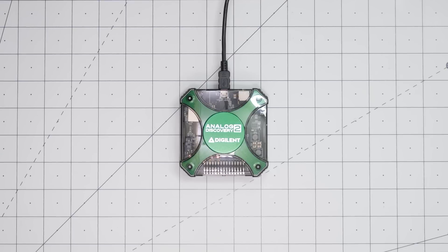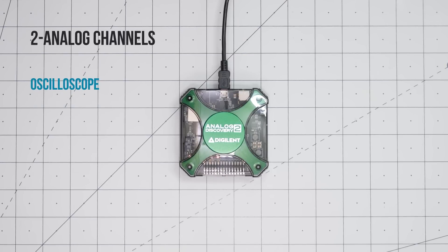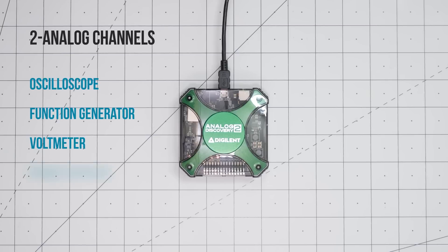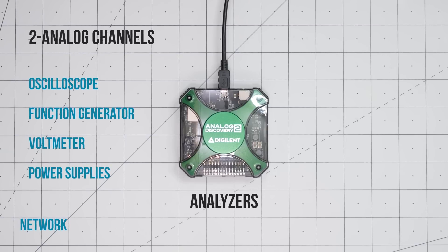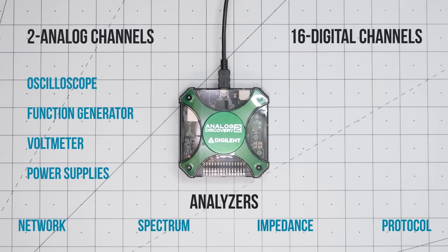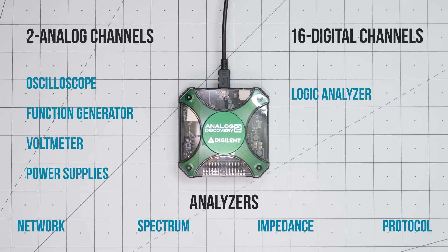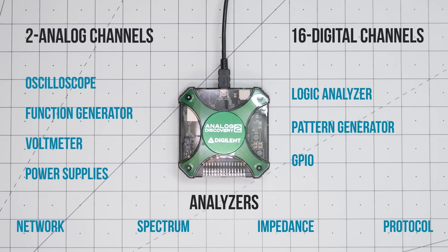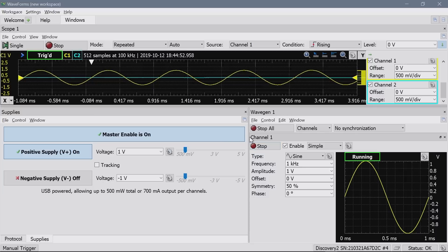The Analog Discovery features two analog channels for an oscilloscope, function generator, and voltmeter. It also has two programmable power supplies, a network analyzer for Bode plots, a spectrum analyzer, an impedance analyzer, a protocol analyzer, and 16 digital channels. Those can be a combination of logic analyzer, pattern generator, or virtual I/O. The software is very configurable with built-in JavaScript and an API for both C++ and Python. I bought this unit myself, deciding to review it as an excellent follow-up to the instrument basics series.